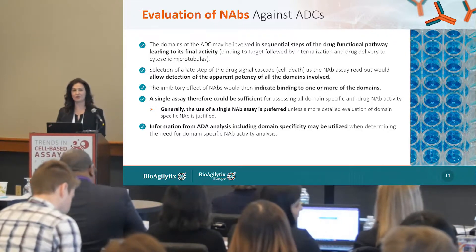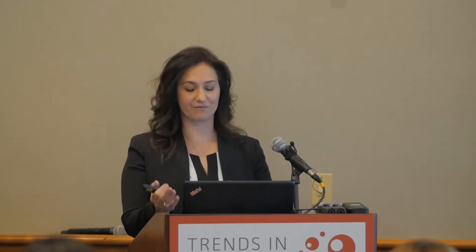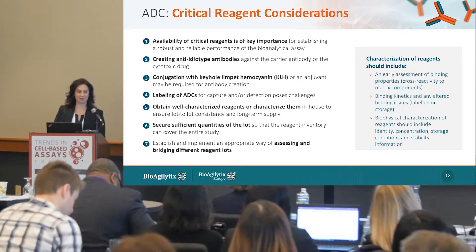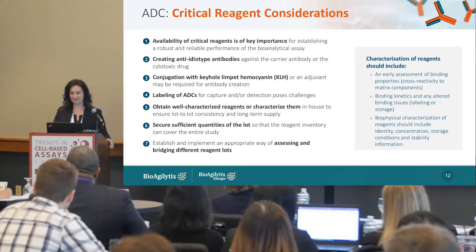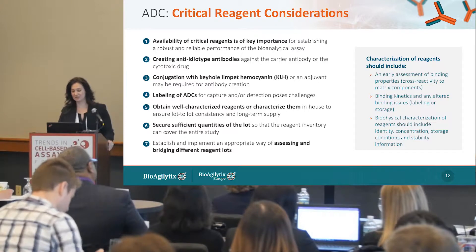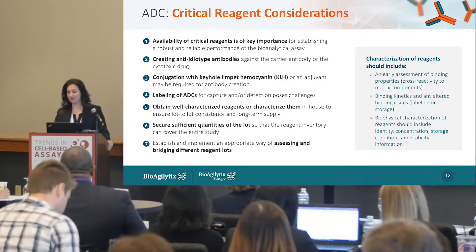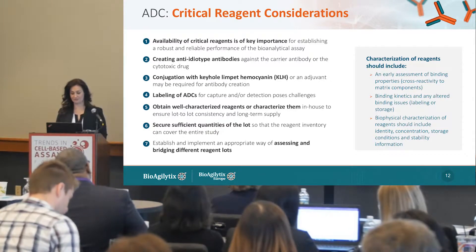Typically you'll glean domain-specificity information from the ADA screening results — if you don't see it in the ADA screening, you won't really need to go further in the NAB assessment. Critical reagents are very important. As my old boss at Pfizer used to say, they're like grapes — good grapes make good wine, and good reagents make good assays. For immunogenicity assays for ADCs, specialized reagents are required as controls, and it is imperative to ensure adequate quality and quantity of these critical reagents to establish a robust and reproducible assay.